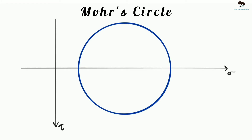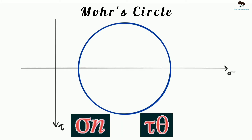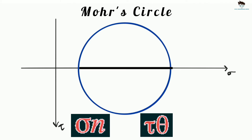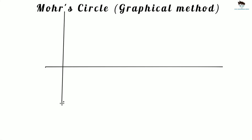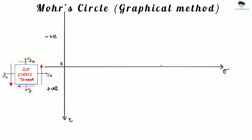Mohr's circle is a graphical method to determine the normal and shear stresses for any plane on a stress tensor, easily without using stress transformation equations. To construct Mohr's circle, we draw a horizontal and a vertical axis. The horizontal axis represents the normal or direct stresses, and the vertical axis represents the shear stresses. We then mark sigma x and sigma y on the horizontal axis.